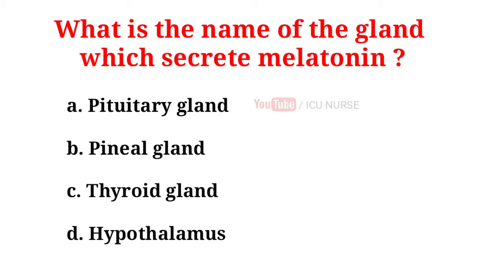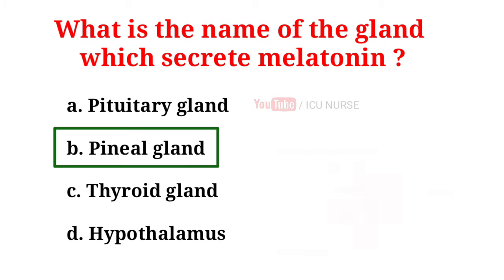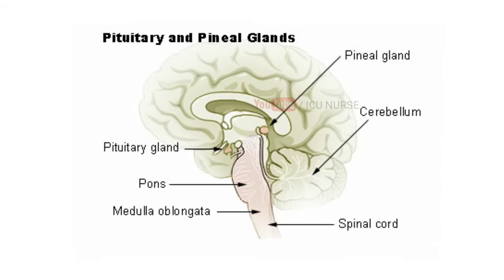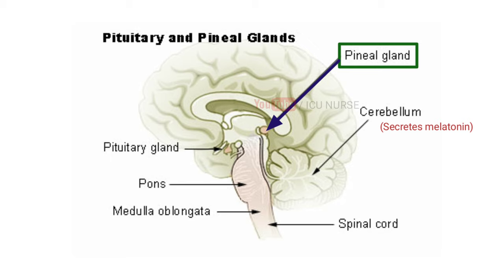What is the name of the gland which secretes melatonin? A. Pituitary gland, B. Pineal gland, C. Thyroid gland, D. Hypothalamus. The correct answer is B. Pineal gland. The pineal gland is the smallest endocrine gland, attached to the roof of the brain, and secretes melatonin. Melatonin is responsible for setting the biological clock.